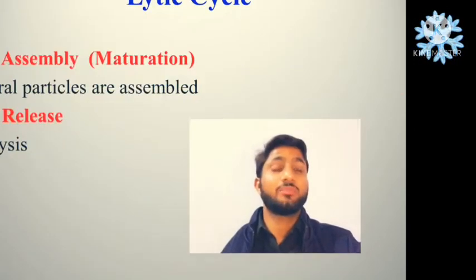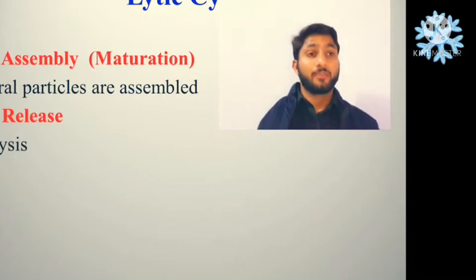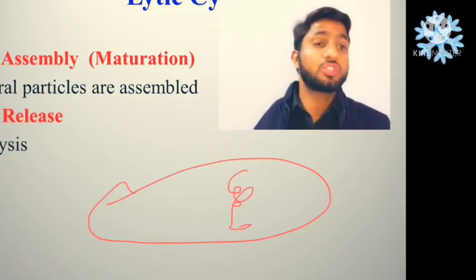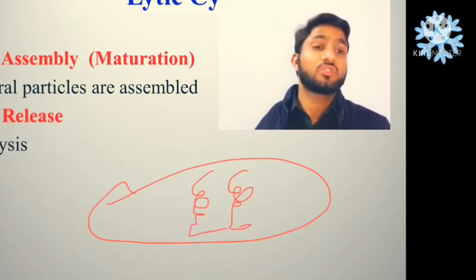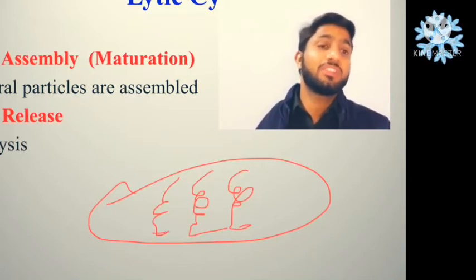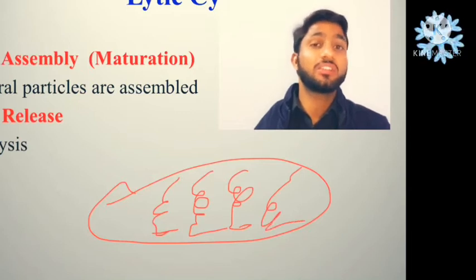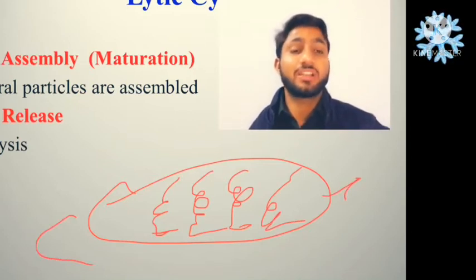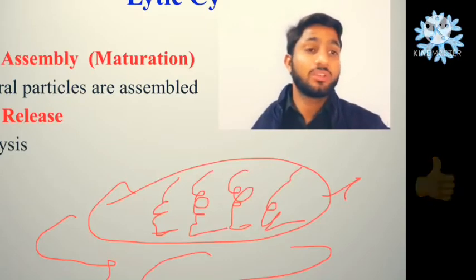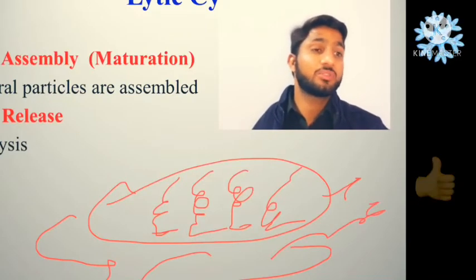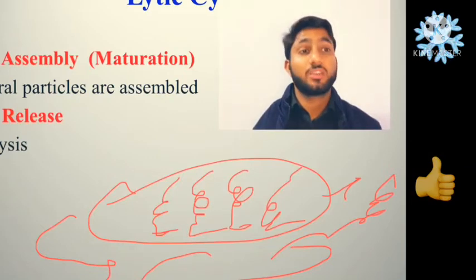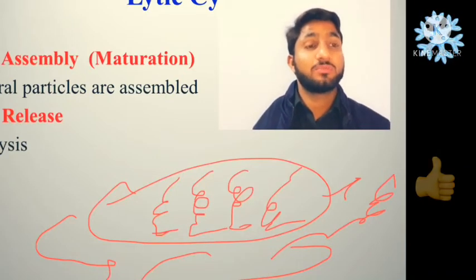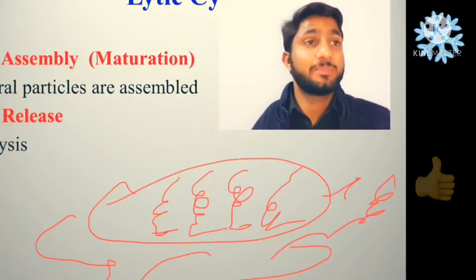In the final steps, viral particles are produced properly inside the bacteria. These viruses mature inside the bacteria and then are released. The bacteria burst open — this is lysis — and the viral particles go outside. This way, the viruses have made copies of themselves and can go on to infect other cells.